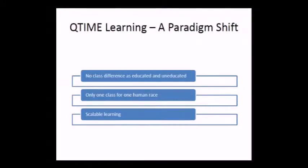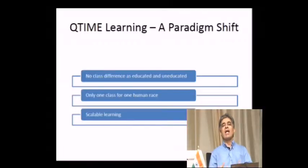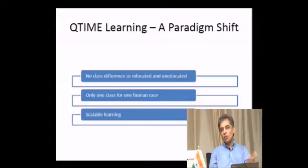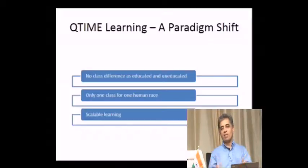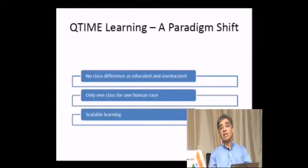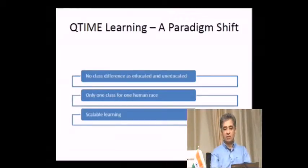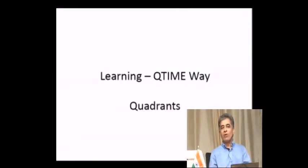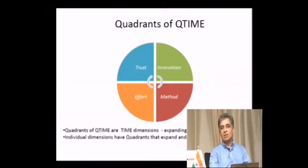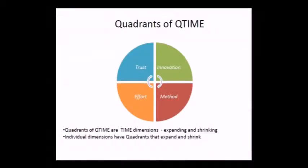Q-time learning promotes one class for the entire human race — there is no division of educated and uneducated masses. With this learning, everyone is educated to some respect. It is also scalable: it can be learned at the lowest individual level or at the highest level of a nation. The Q-time consists of four quadrants, and those four quadrants are dimensions themselves in learning.